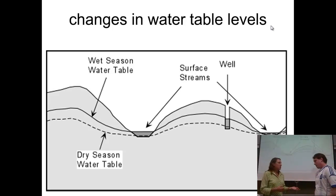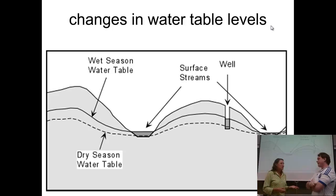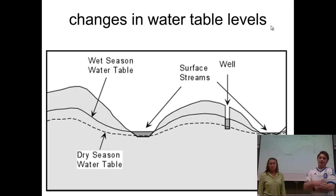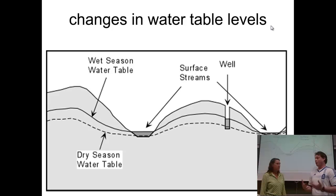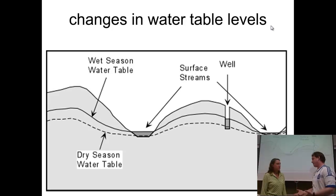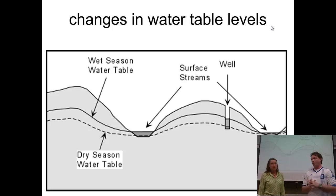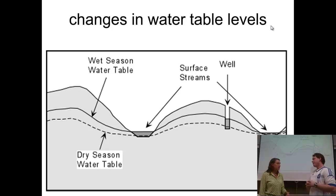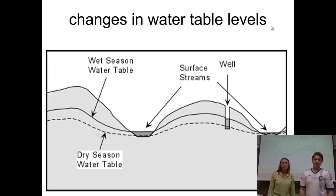Thinking about recharging aquifers — what happens when there's a lot of rain, or like last summer when there's almost no rain? Does the water table stay the same or does it change? It definitely fluctuates, and that fluctuation can be seasonal. In spring with a lot of rainfall and snowmelt, you see more recharging and the water table rises. In summer with heat and evaporation, water escapes and the water table is lower. This has implications if you're drilling a well — you want to make sure you drill deep enough that during a drought you still tap into a good water source, accounting for seasonal fluctuations.